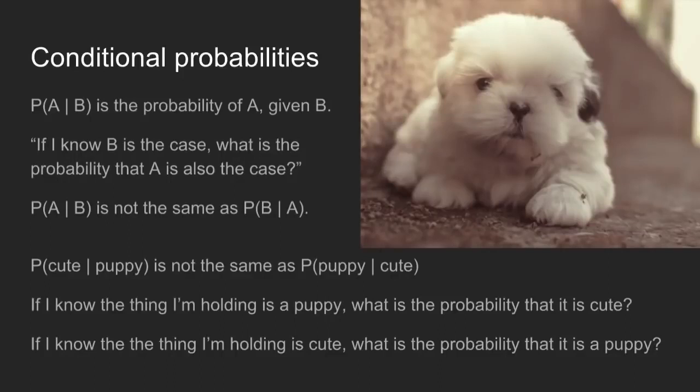Conditional probabilities: if I know that B is the case, what's the probability that A is also the case? You can't reverse B and A and have this be true. For instance, if I know that the thing I'm holding is a puppy, what's the probability that it's cute? The probability is very high. If I know that the thing I'm holding is cute, what's the probability that it's a puppy? Well, it might be a puppy, it might be a kitten, it might be a hedgehog, it might be a small human. So the probability there is less moderate. These things are not interchangeable in conditional probabilities.